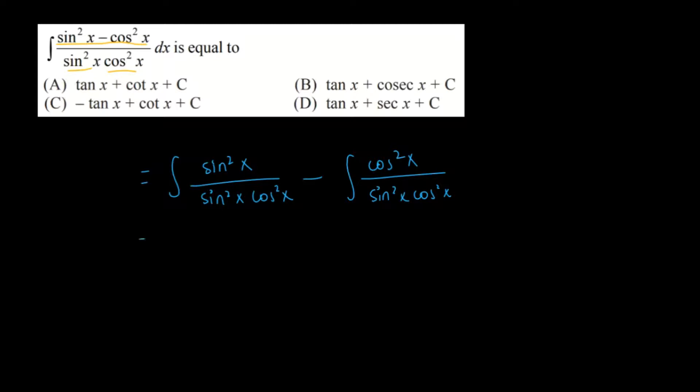Now this can also be written as the integral of sec squared x, because these both cut and 1 over cos squared x. Minus the integral, cos squared x both cut and 1 over sin squared x, so cosec squared x dx.